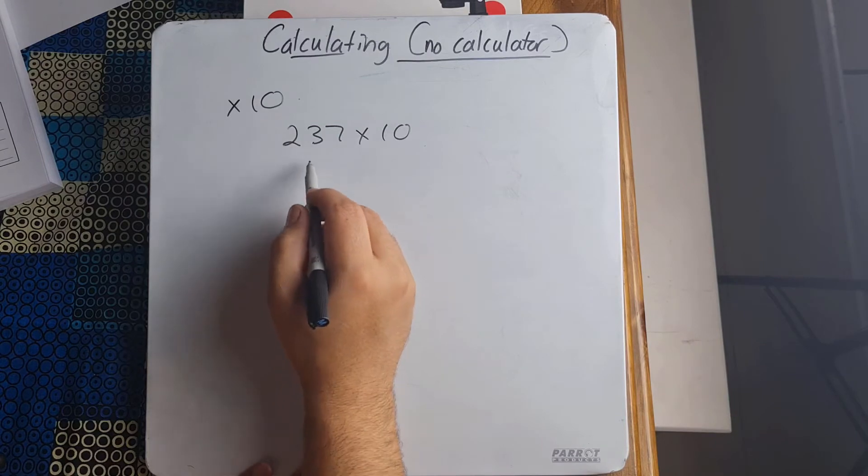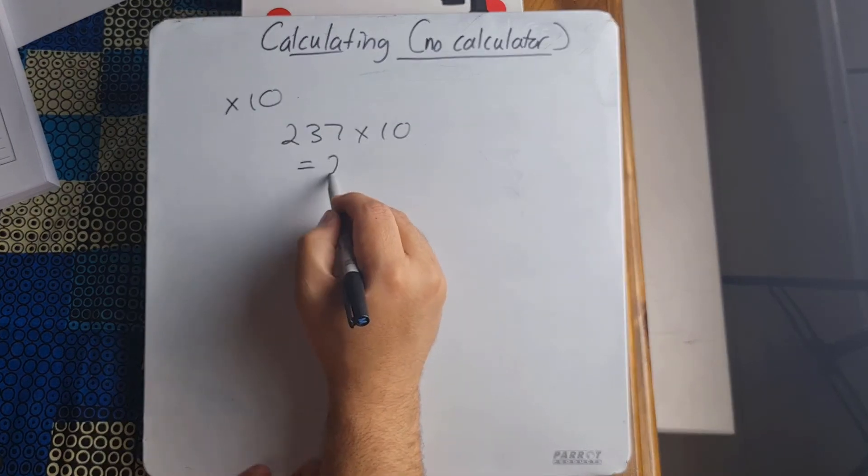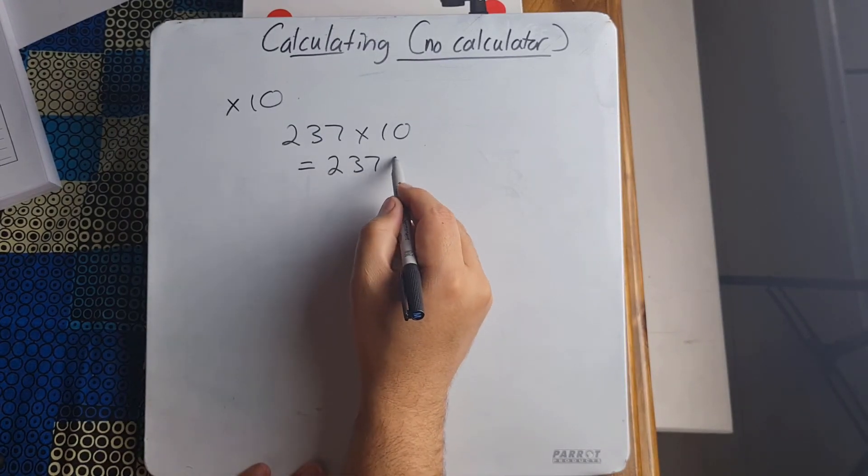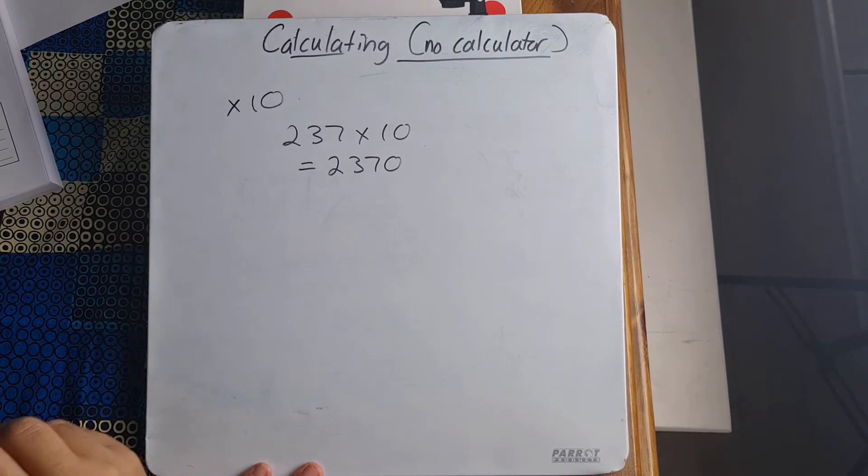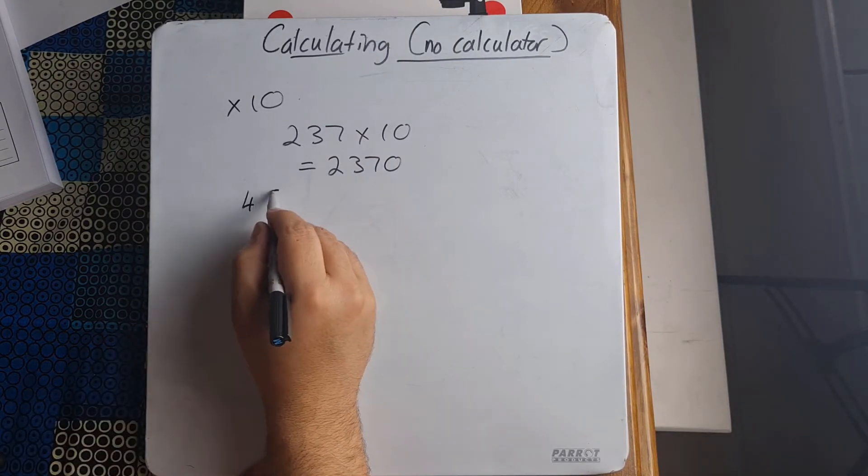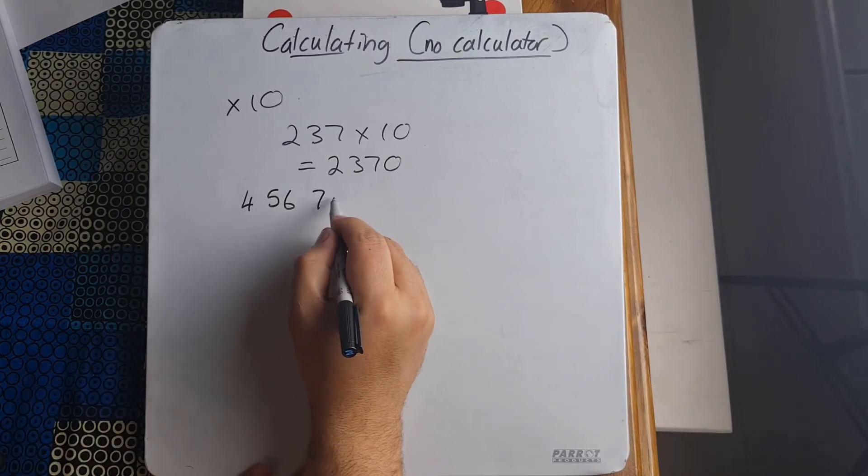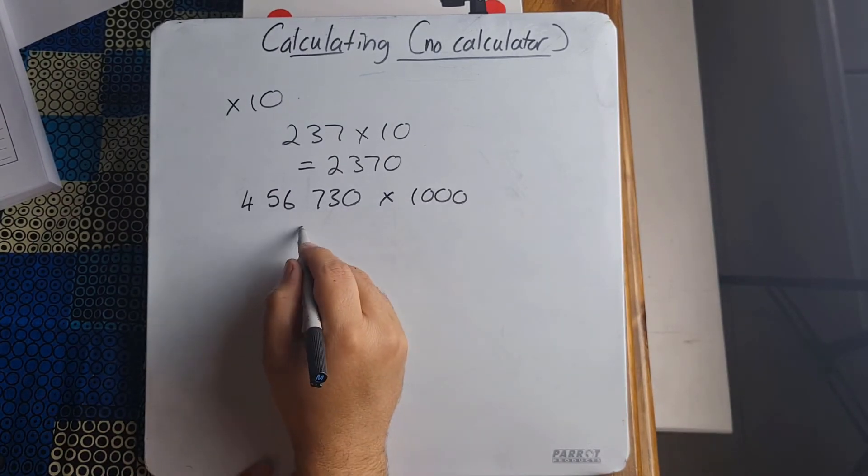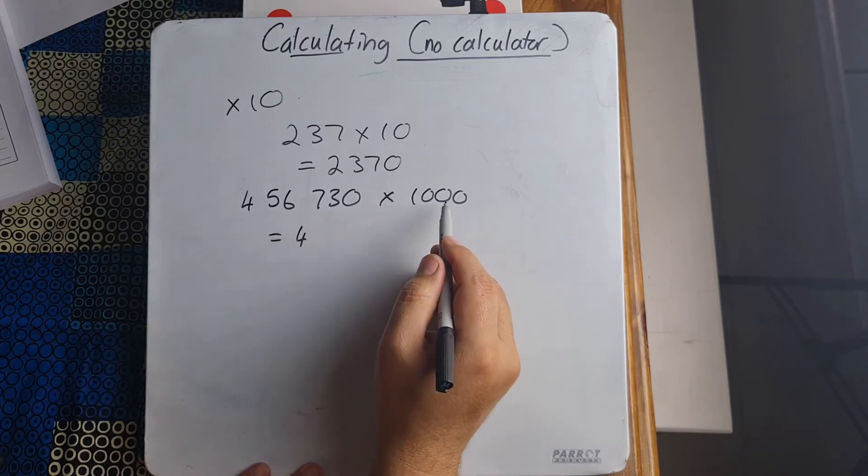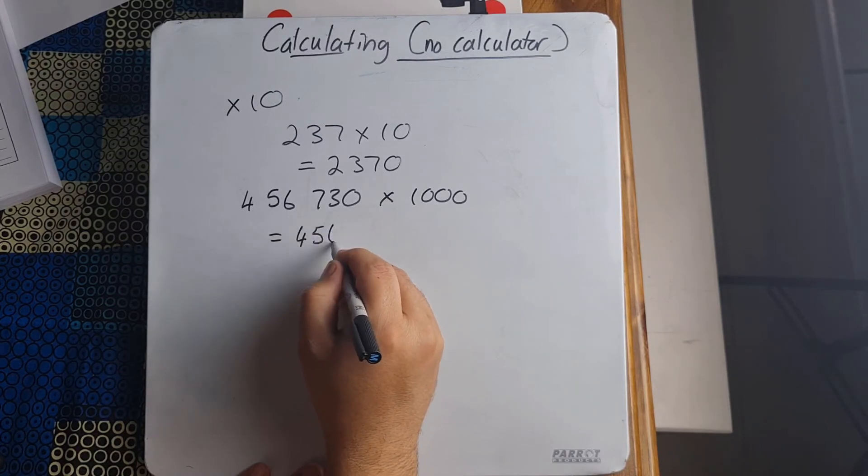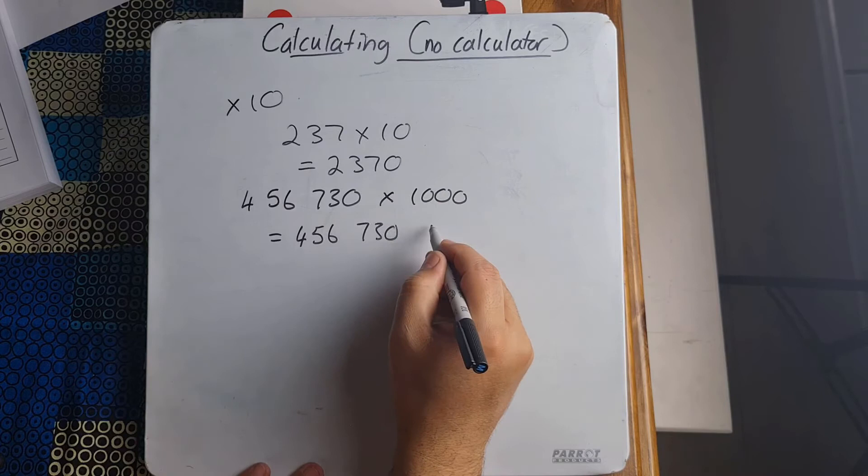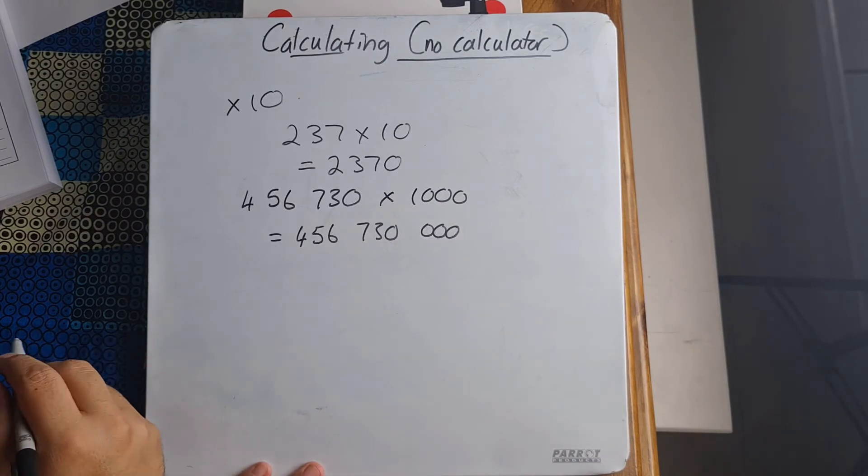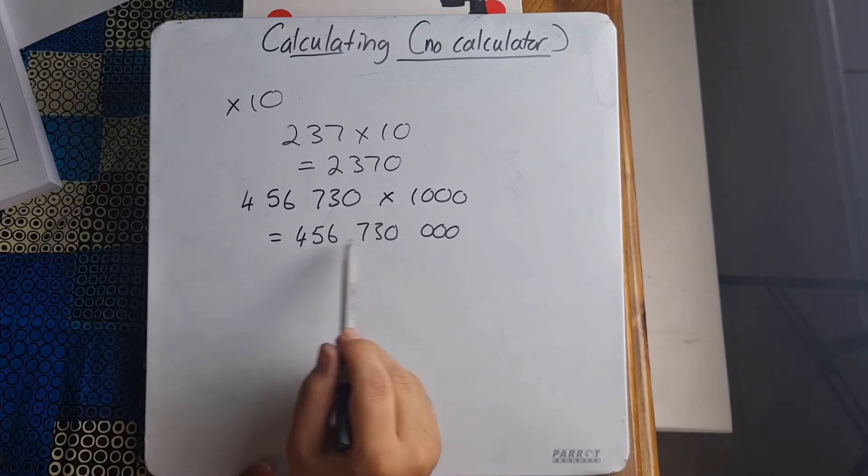If I've got a number like 456,730 and I want to multiply that even by a thousand, what am I doing? I'm going to be adding those three zeros, so it's 456,730,000. Sounds like a cell phone number, okay?